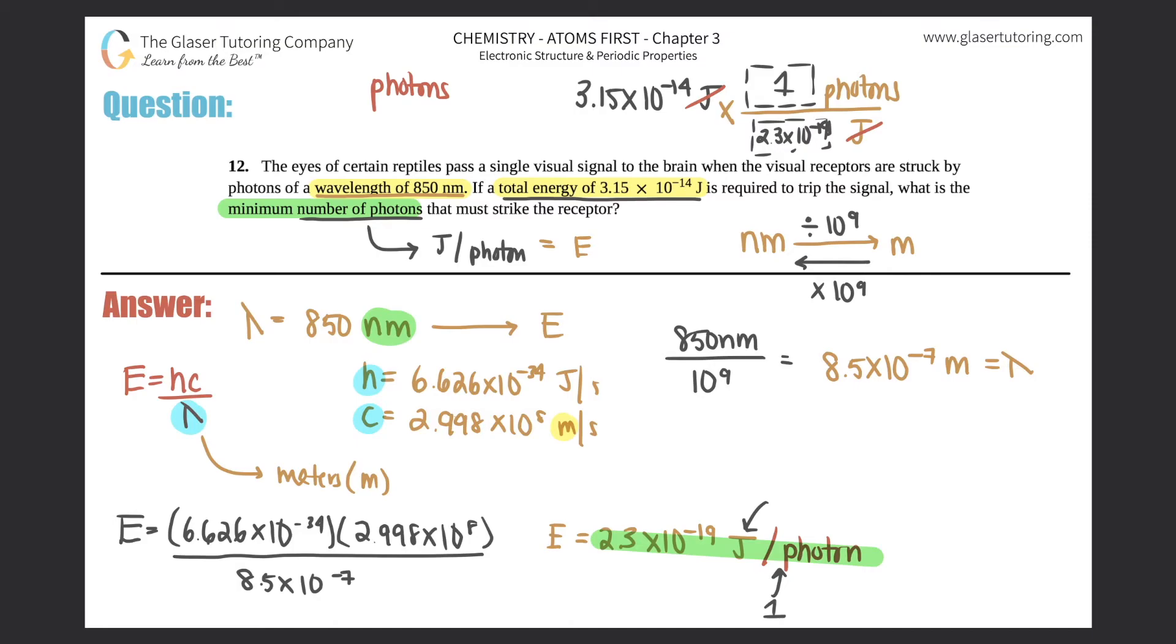So 3.15 times 10 to the negative 14th divided by 2.3 times 10 to the negative 19th, we get 1.4 times 10 to the... let's see, 1, 2, 3, 4, 5... photons.